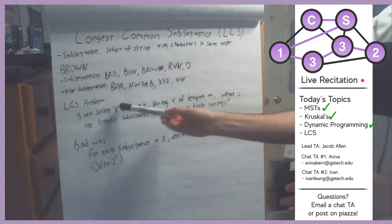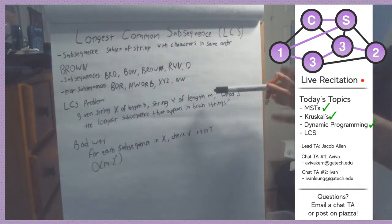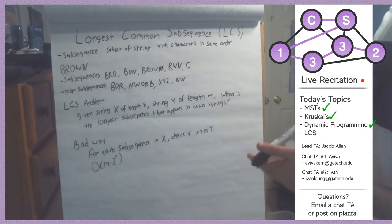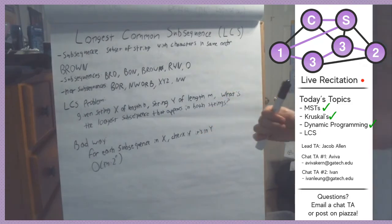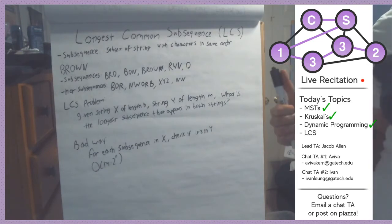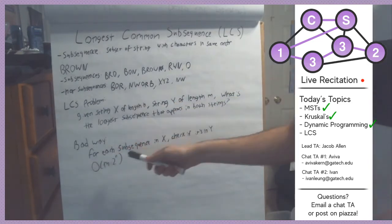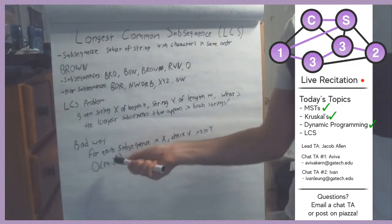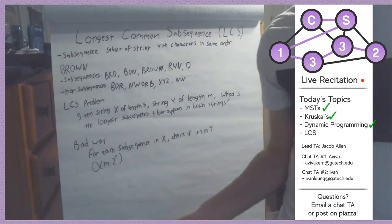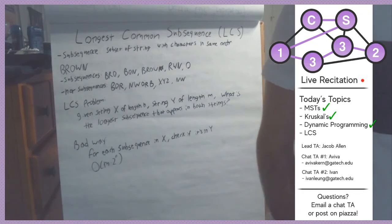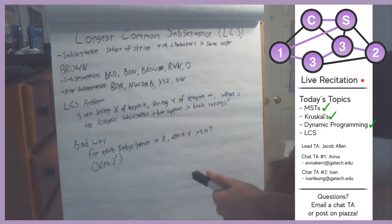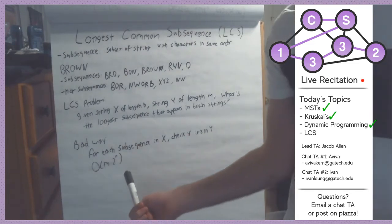Our LCS problem: given two strings X of length n and Y of length m, find the longest subsequence that is in both strings. The obvious brute force approach — look at all subsequences of X and check if they're in Y — is exponential: 2^n subsequences, and checking each takes O(m) time. So this is an exponentially bad algorithm and we can do better using dynamic programming.